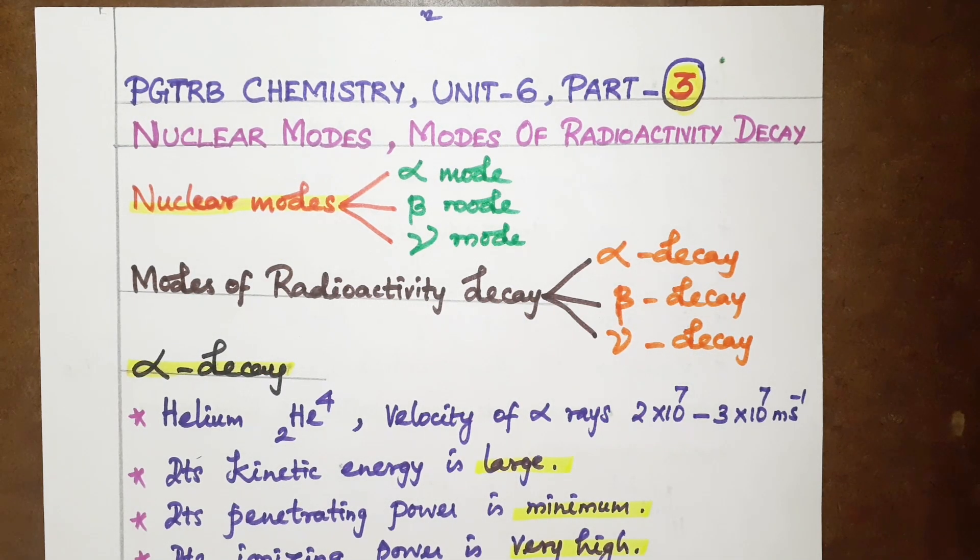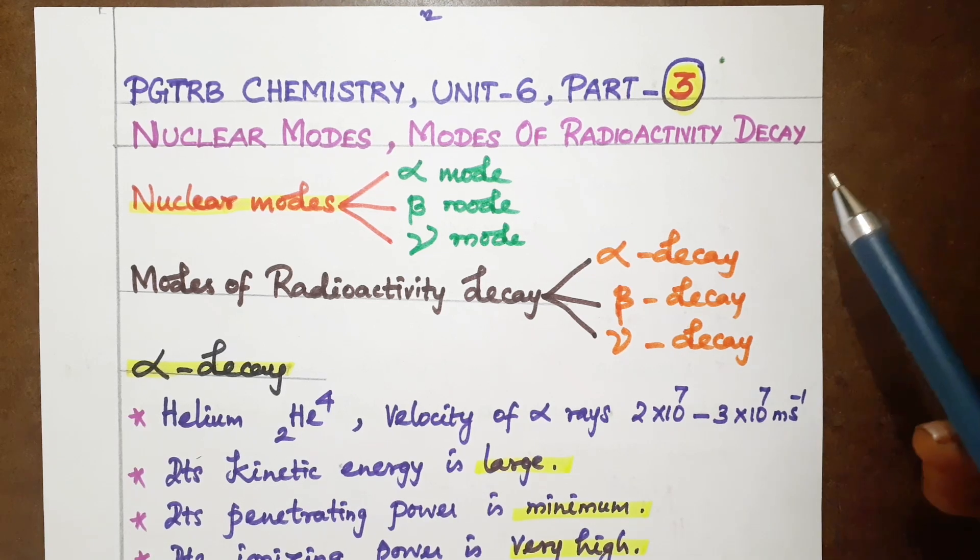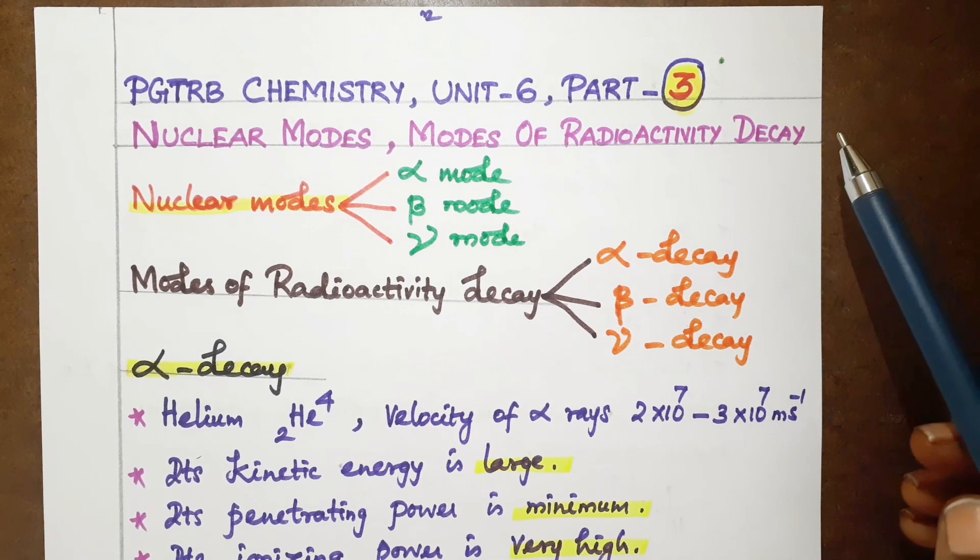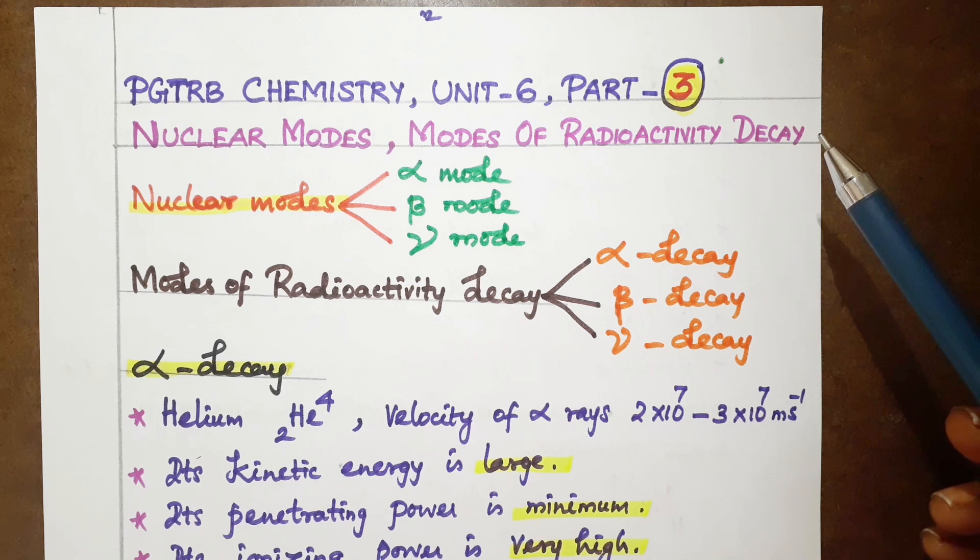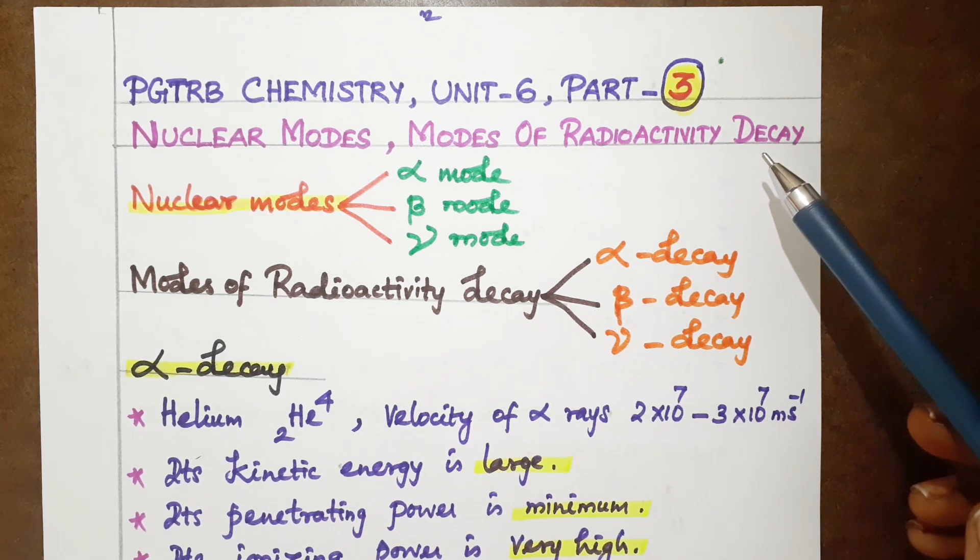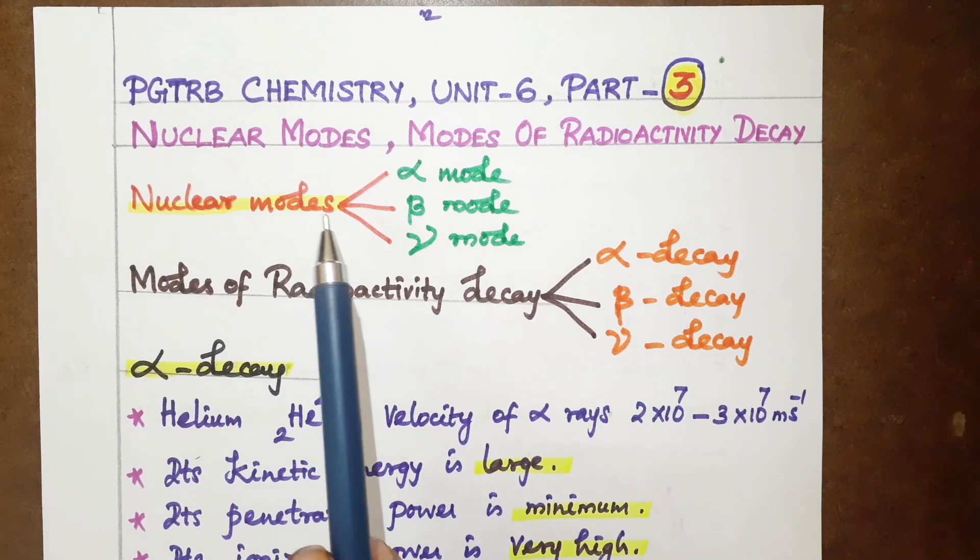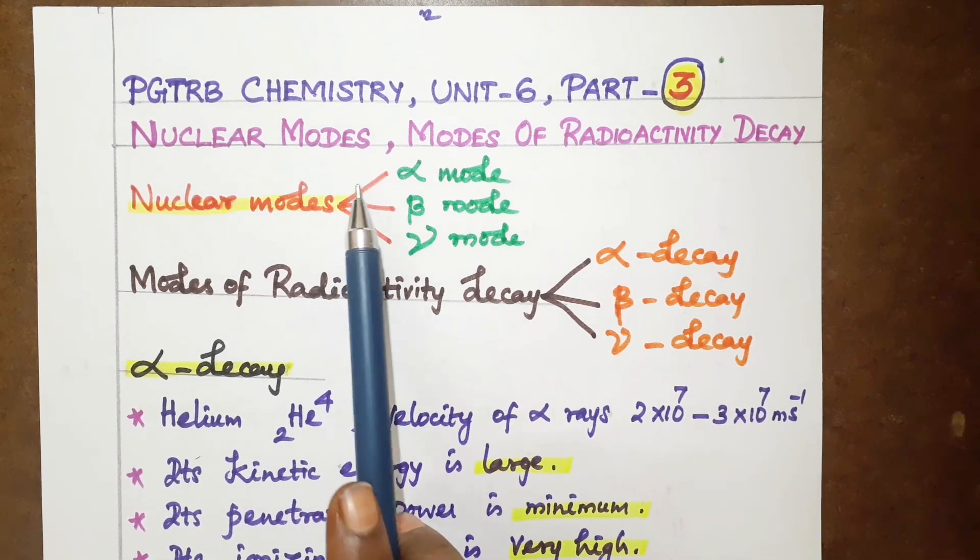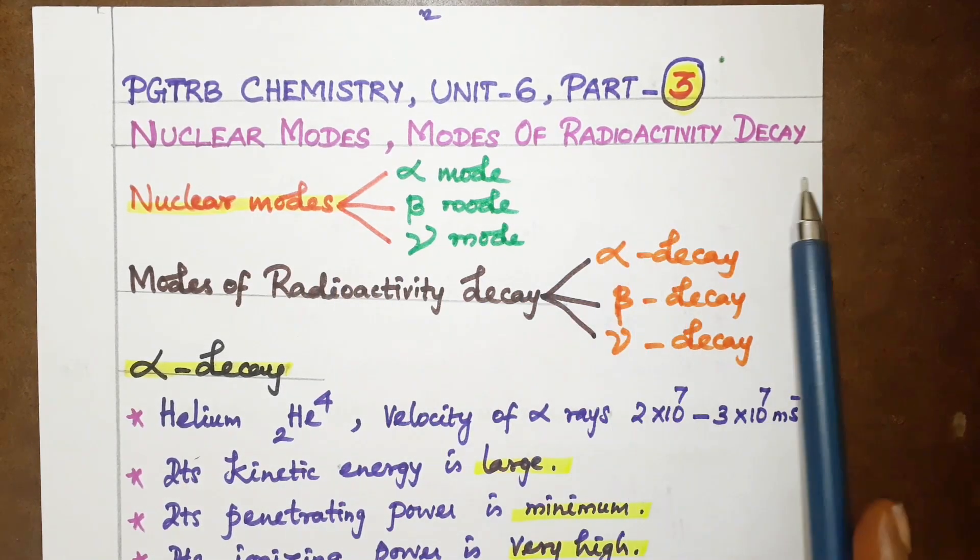Hello, good morning. Welcome to Chemistry School of Learning YouTube channel. The PGTRB portion, Unit 6 Nuclear Chemistry. This is the third class on the topic of nuclear modes and modes of radioactivity decay.